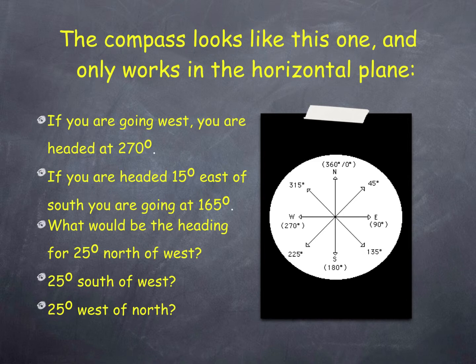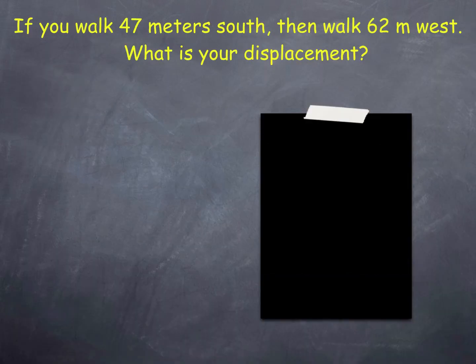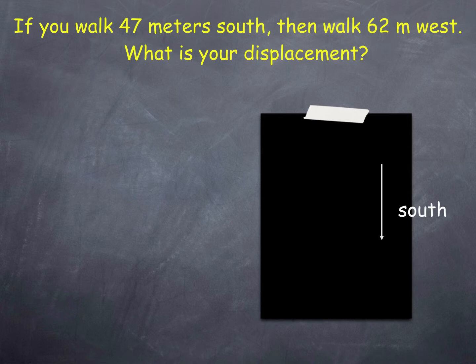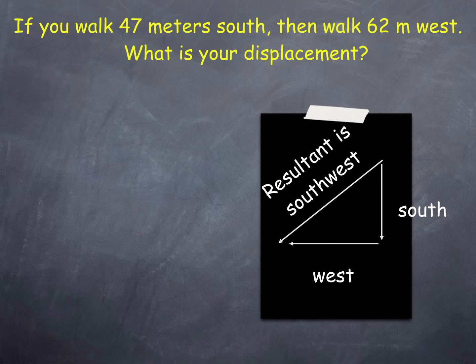If anybody doesn't understand this, pause now and make sure everybody in your group is on task, because this is important and it's not going to go away. Our first problem: if I'm walking 47 meters south and then I walk 62 meters west, what is my displacement? To do this it's great to draw little pictures. I'm going to draw an arrow pointing south and then an arrow pointing west. If I'm going south and then west, my displacement is clearly going southwest, and we're going to call that displacement the resultant.